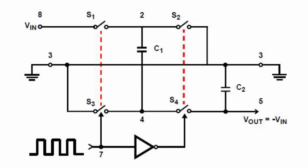With the closure of S2, S4 keys and opening of S1, S3 in the second half cycle, the C1 capacitor's charge is partially transferred to the capacitor C2, which provides a negative voltage at the output of the integrated circuit.